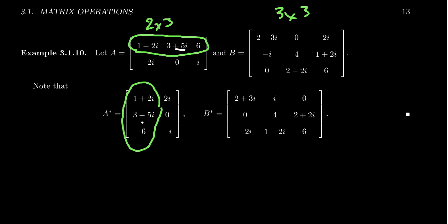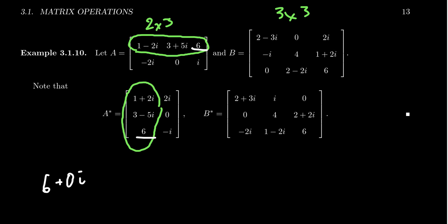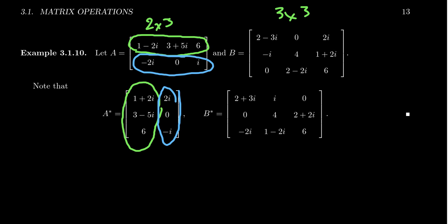Negative 2i becomes positive 2i, and positive 5i becomes negative 5i. When you take the conjugate of 6, that actually stays 6, because 6 is 6 plus 0i, so its conjugate is 6 minus 0i, which is still 6. When you take the conjugate of a real number, it doesn't do anything. Then for the second row, the second row of A becomes the second column of A star — but you take conjugates again. So negative 2i becomes positive 2i. The conjugate of 0 is 0 because it's a real number. And then the conjugate of i becomes negative i. You switch the sign of all the imaginary parts.